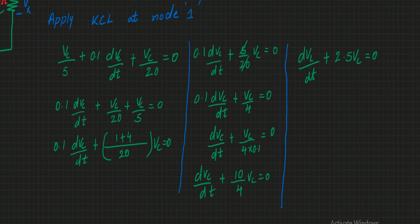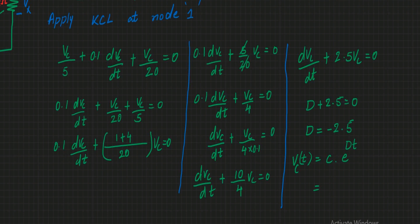The characteristic equation is d + 2.5 = 0, giving root d = -2.5. The solution is Vc(t) = C·e^(-2.5t). This is the generalized equation for Vc for t greater than 0.